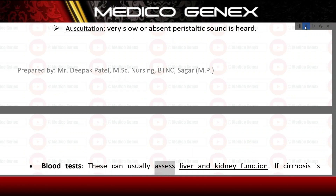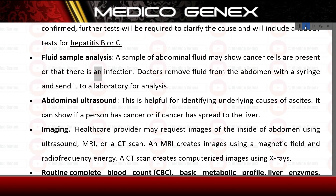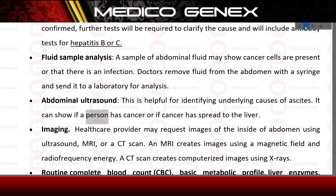Blood tests can usually assess liver and kidney function. If cirrhosis is confirmed, further tests will be required to clarify the cause, including antibody tests for Hepatitis B or C. A sample of abdominal fluid may show whether cancer cells are present or that there is an infection. Doctors remove fluid from the abdomen with a syringe and send it to a laboratory for analysis. Abdominal ultrasound is helpful for identifying underlying causes of ascites and can show if cancer has spread to the liver.